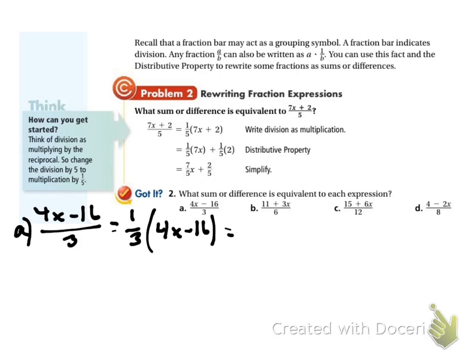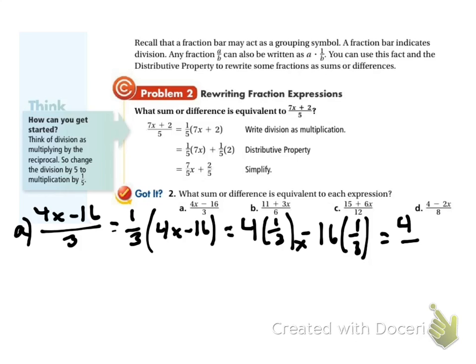Now I distribute that 1/3 in: 4 times 1/3 minus 16 times 1/3 — dropping my x there, let me add the x back. That gives me 4/3 x minus 16/3. I can't simplify that any further.